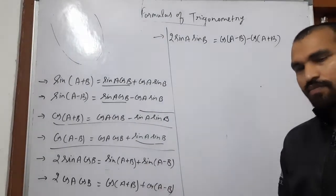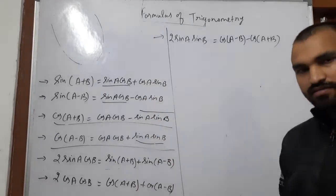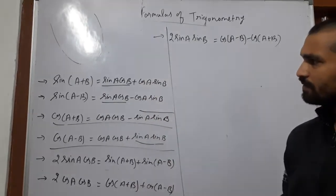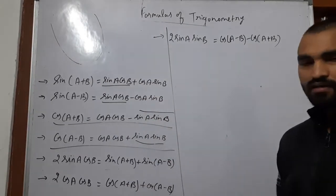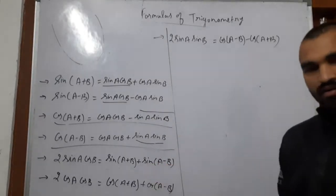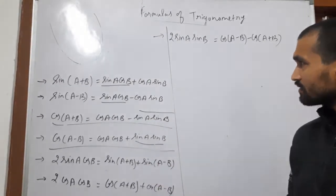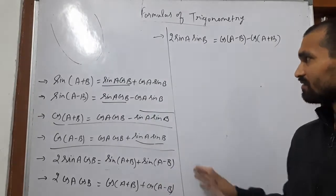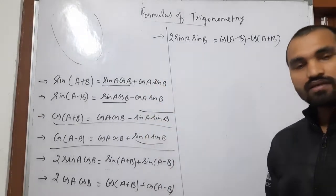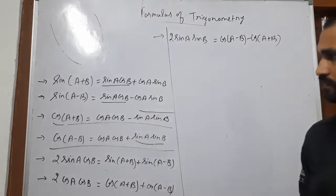These three identities are created simply from those four results. If we have learned those four results, we can derive these three formulas from memory. This is not difficult — it is based on those four basic properties.